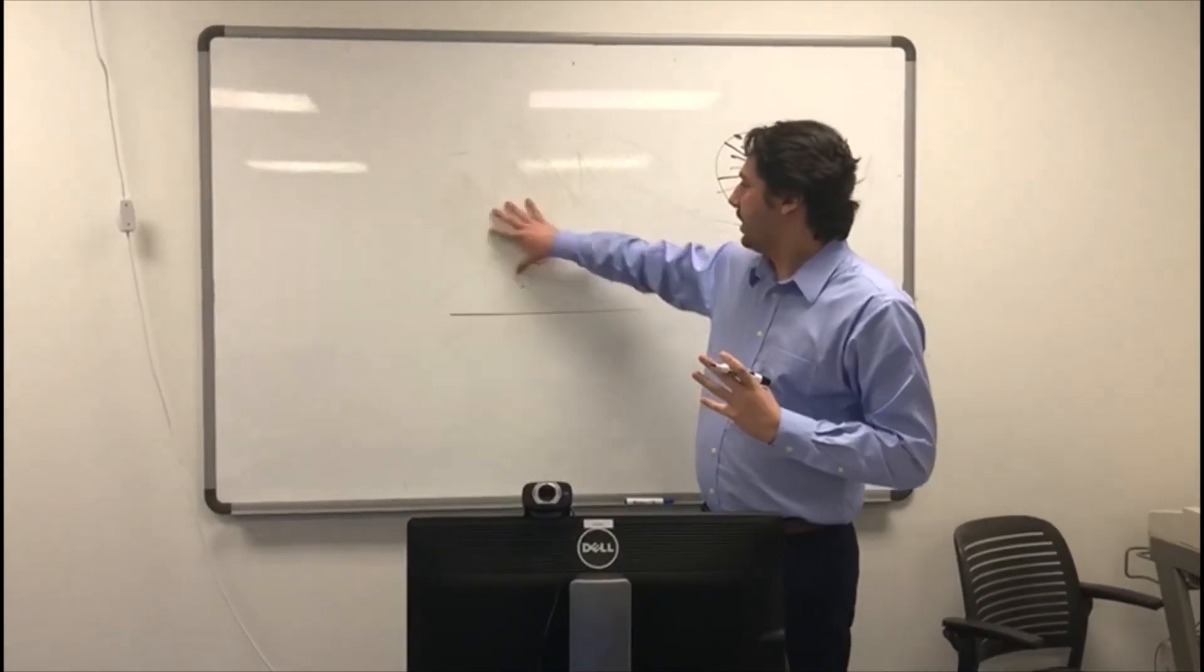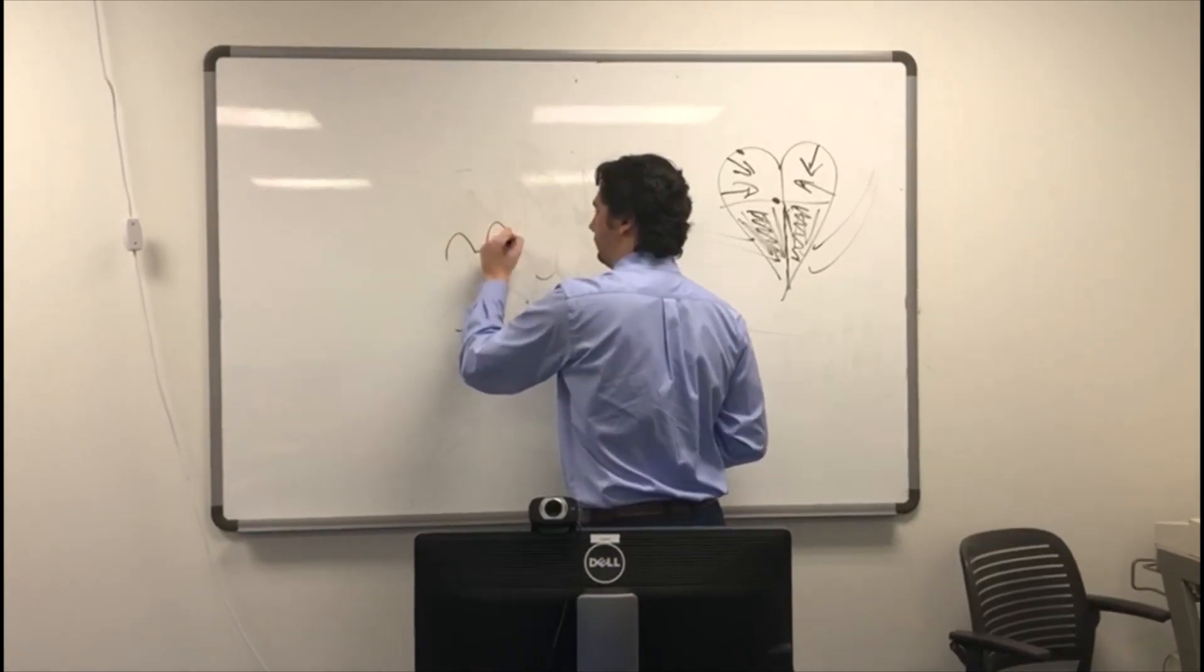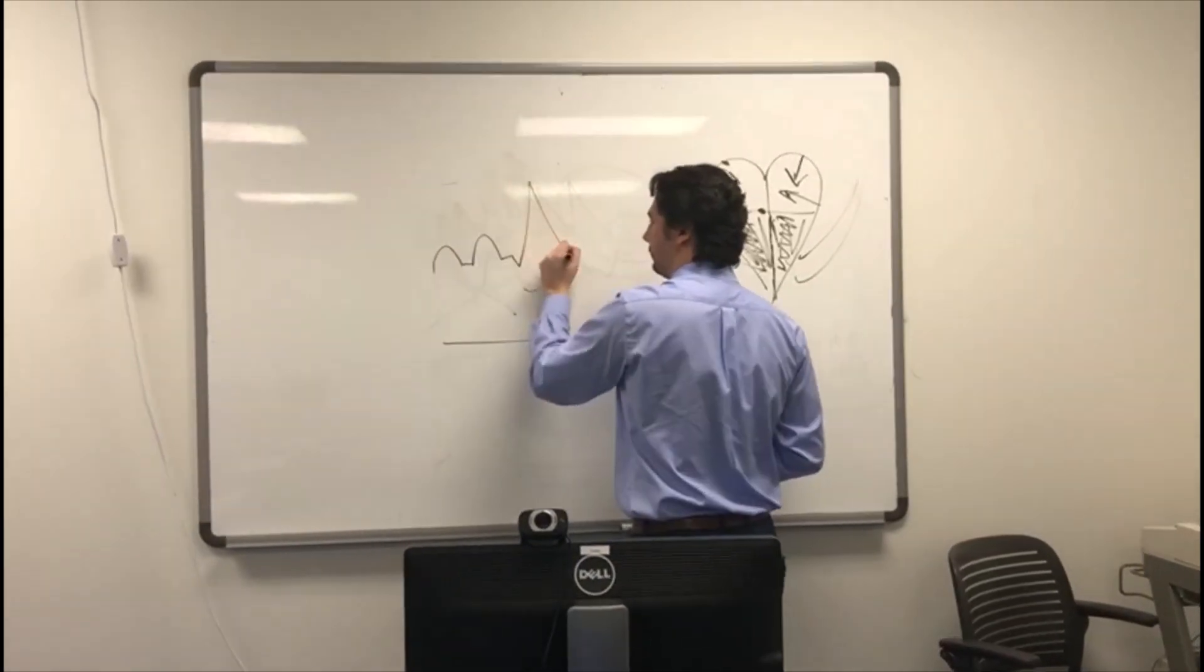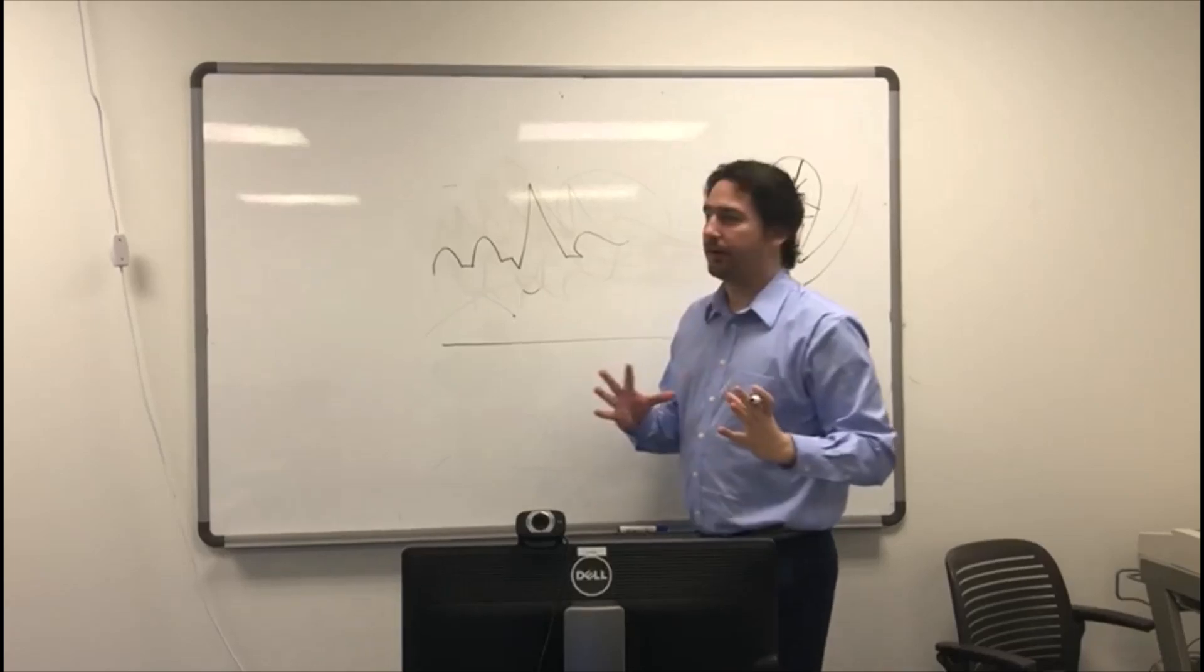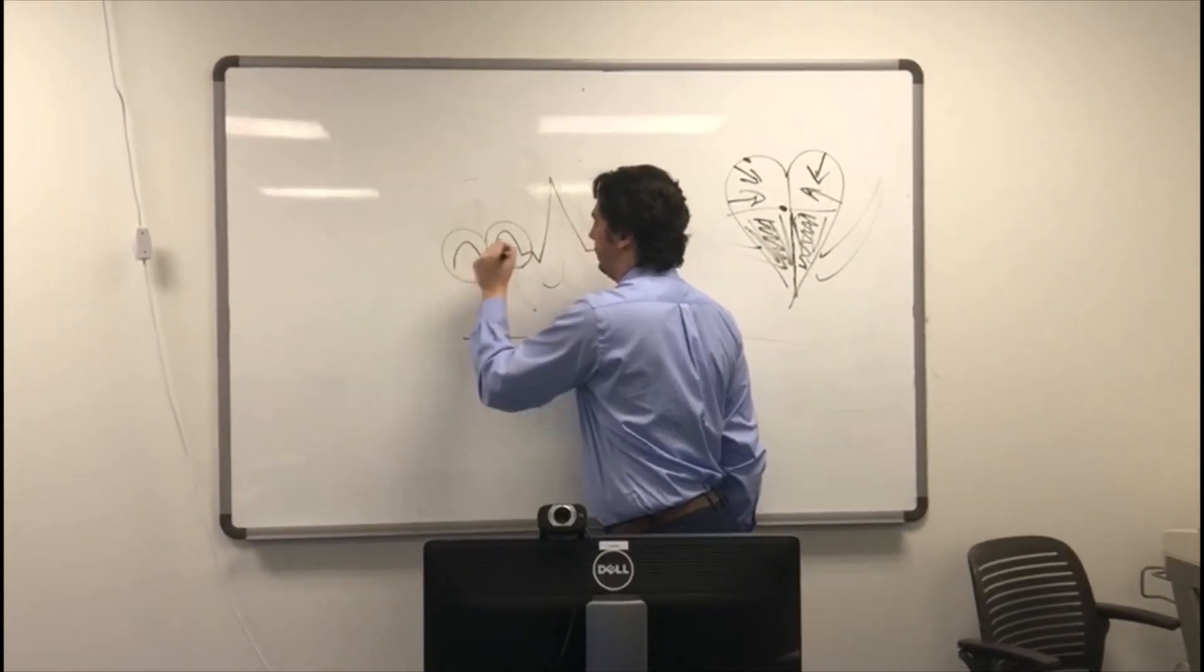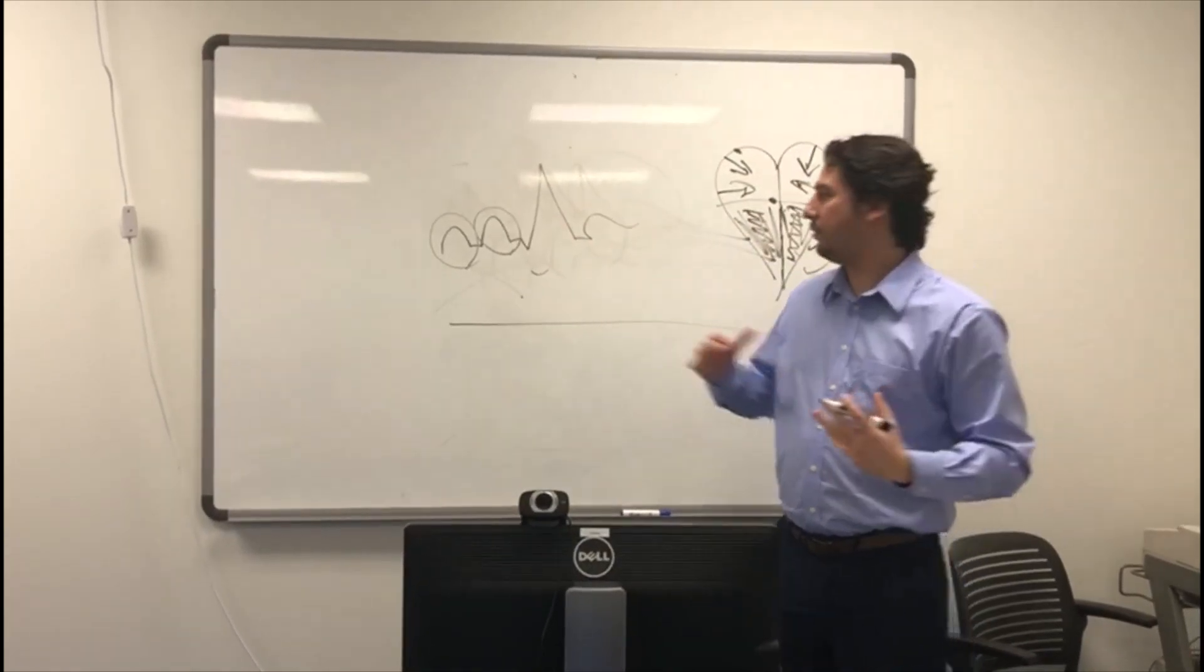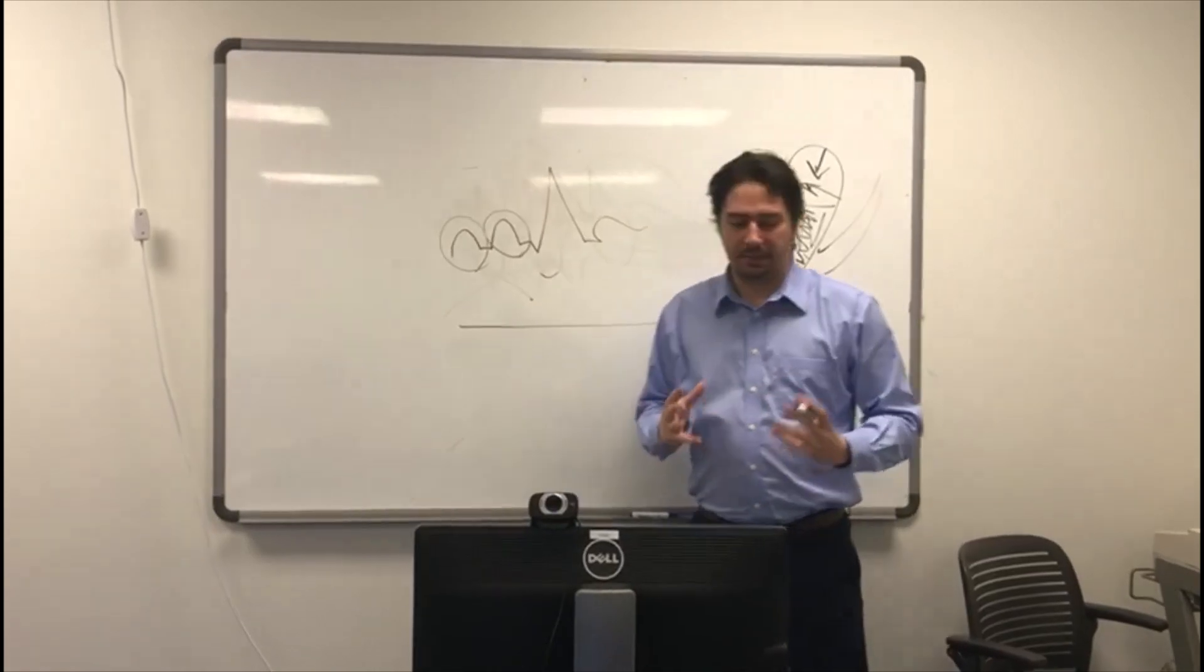So what happens when you have something like that? Well, you have two atrial contractions for one ventricular contraction. So that would be an atrial dysrhythmia.